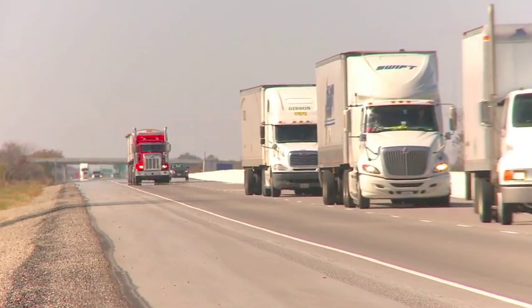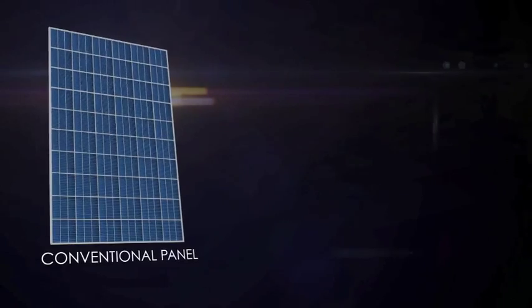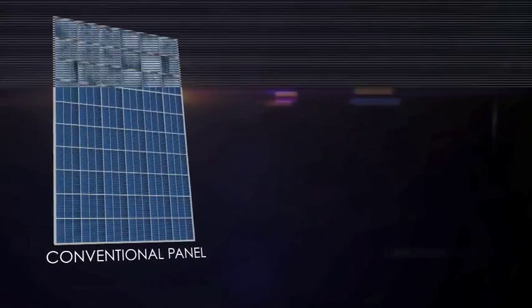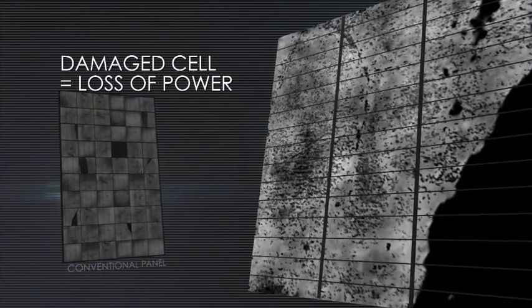Even shipping and installation stresses can cause cells in the panel to crack. What's the problem with cracked cells? In conventional panels, damaged cells essentially stop working, reducing the panel's power output. They can also cause the panel to heat up and accelerate aging.